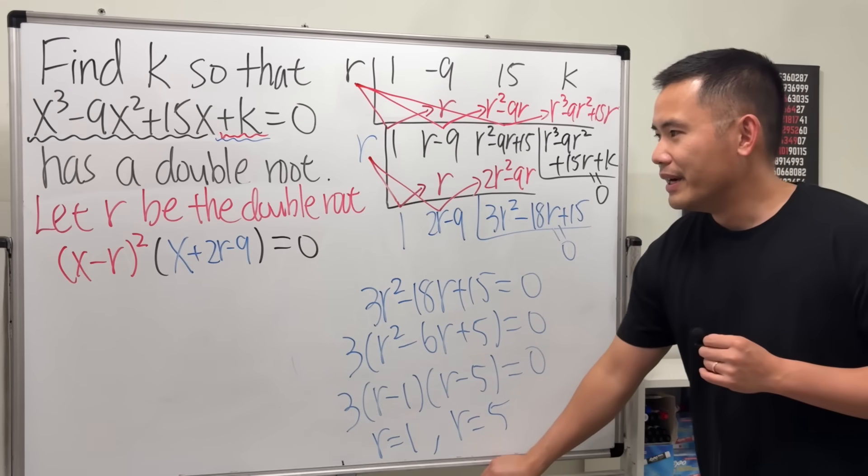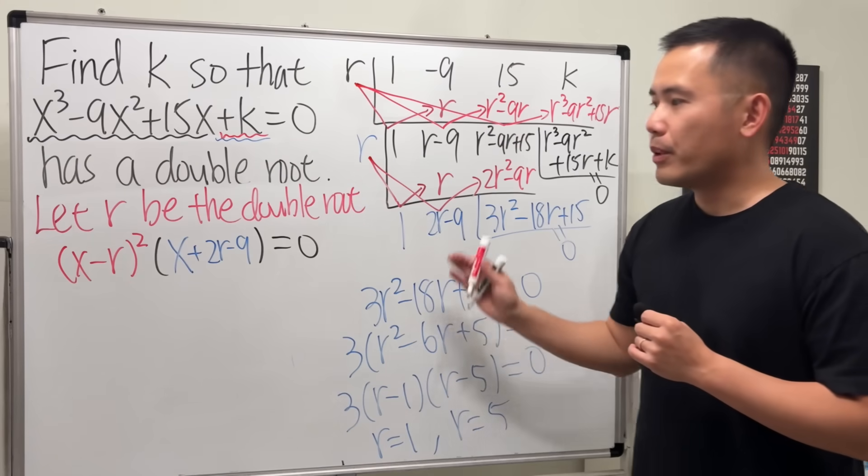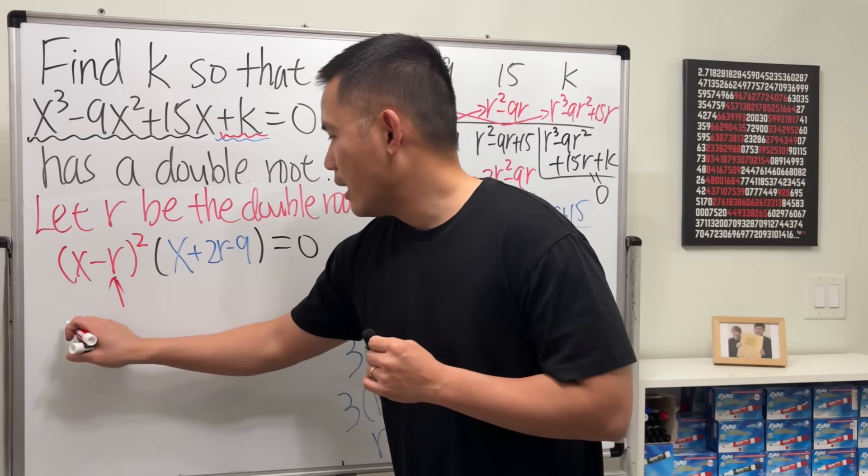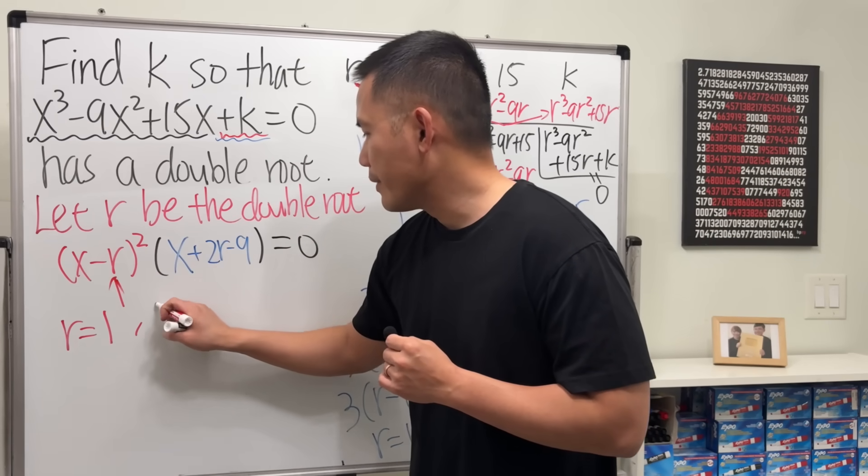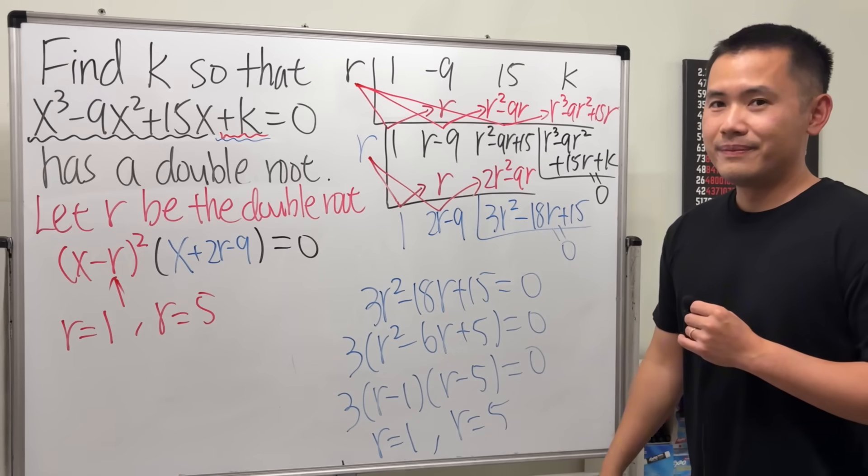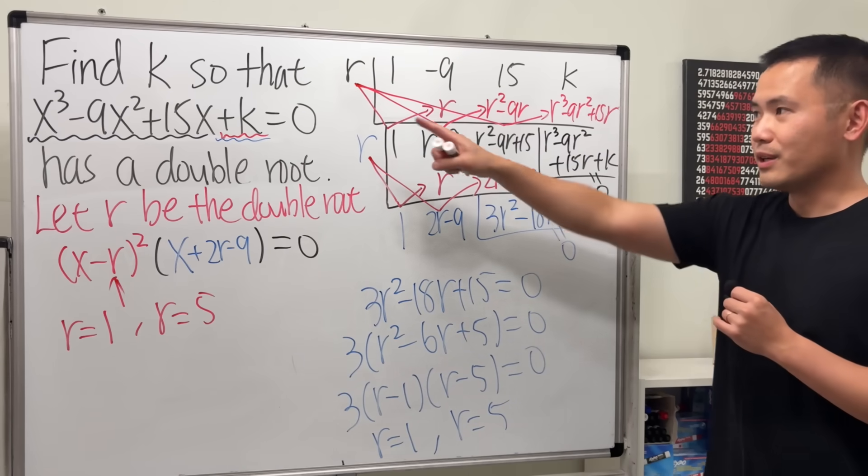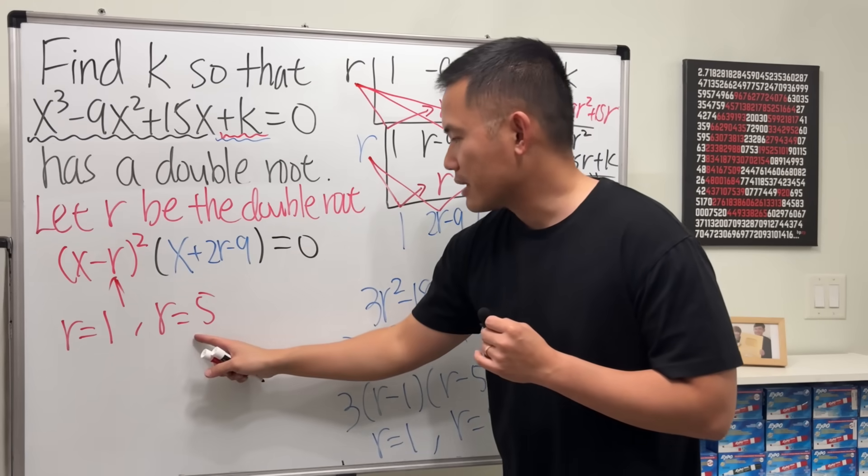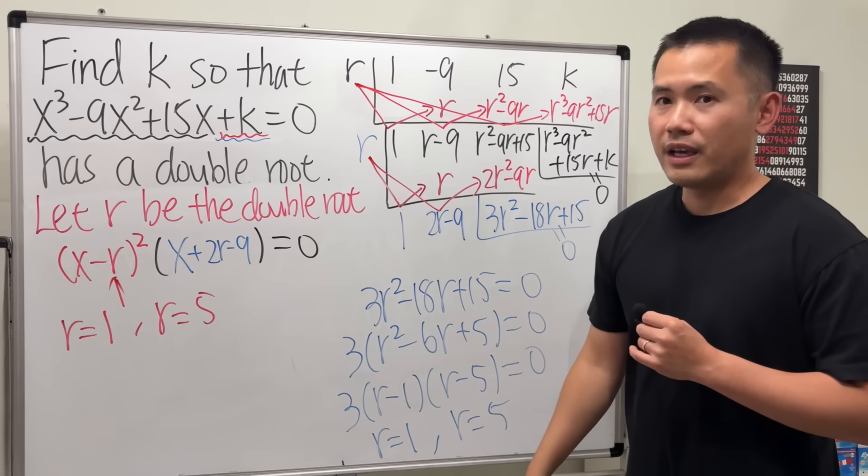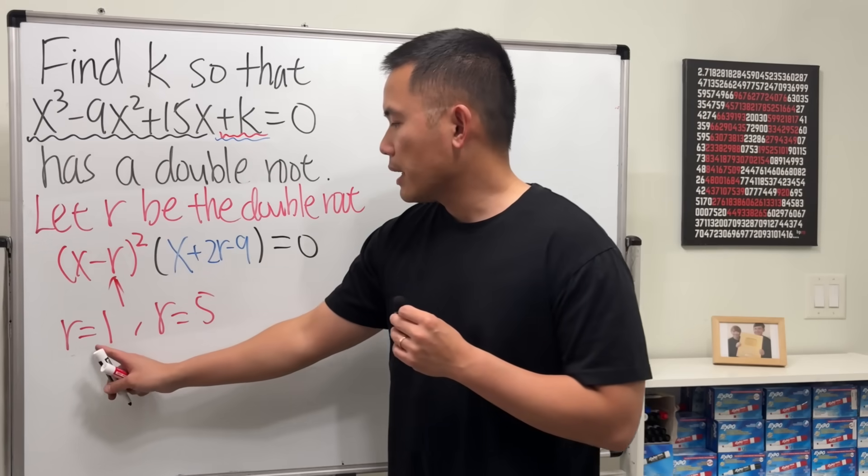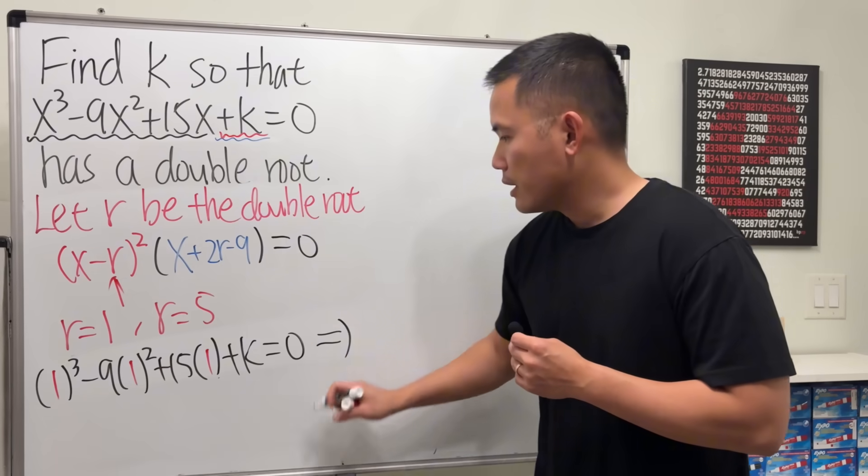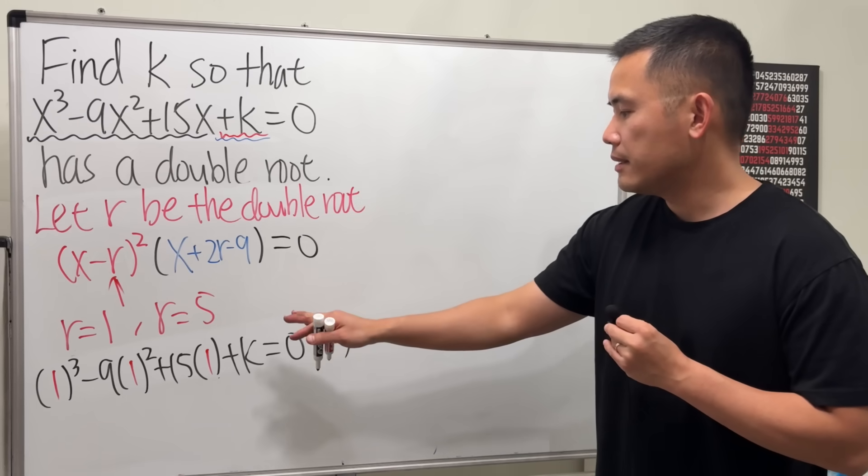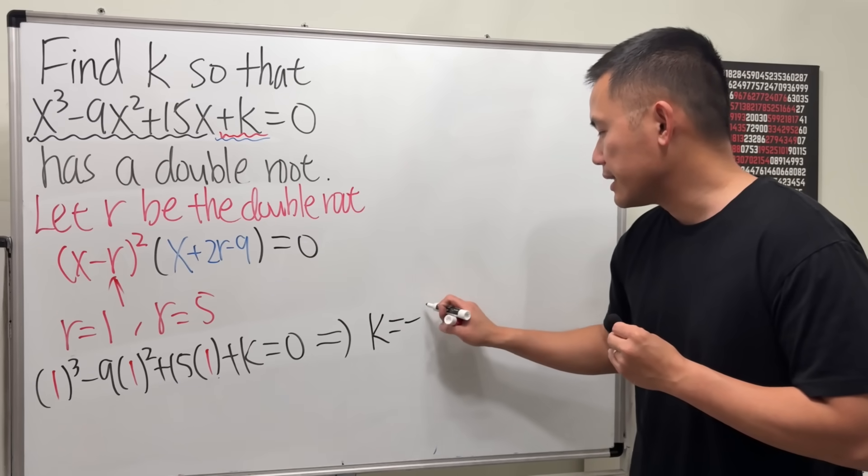So in fact, if r is the double root when this happens, what we know is this right here: r is either equal to 1 or r is equal to 5. How can we get k though? Because you have to find out the k. Well, plug 1 into here, find out the k, and then plug in 5 and find the k. When we plug in 1 into all the x's, that's 1 - 9 + 15, all that's going to be 7, and then plus k = 0, so that means k = -7.